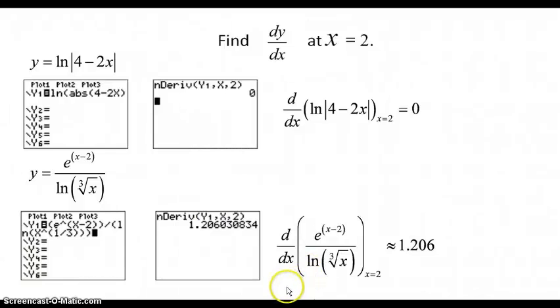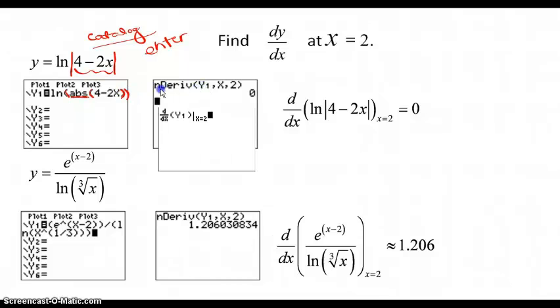So a couple more examples now that involve natural log. So we have y equals the natural log of the absolute value of the quantity 4 minus 2x. Remember, you can pull up absolute value by hitting that catalog button, and it's the first thing in your catalog. So you're going to hit the natural log button, it'll give you an open parentheses, hit the catalog button, and then just hit enter. And that will put abs with an open parentheses there. You put the 4 minus 2x in and close the parentheses and then pull up nDeriv, put your function in there as y1. Remember your commas. We're still evaluating at x equal 2 for our derivative. And this says that the slope of the tangent line for this function at x equal 2 is 0.